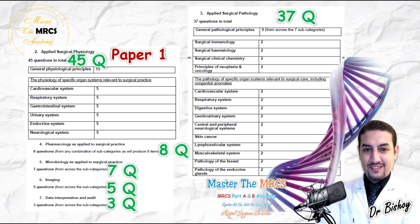That concludes Paper 1: 75 anatomy questions, 45 physiology questions, 37 pathology questions, along with microbiology at seven questions, imaging at five questions, and data interpretation and audit at three questions — giving you the full 180 marks of Paper 1. You can achieve all of them. This is the complete mark distribution of Paper 1.